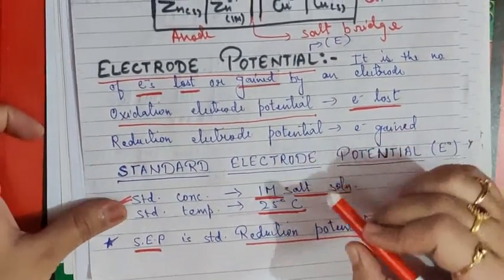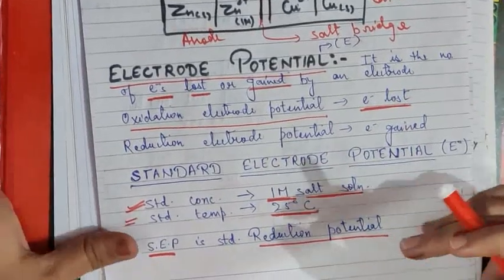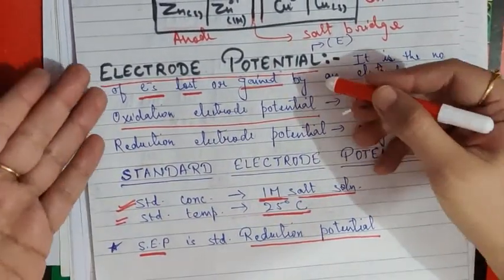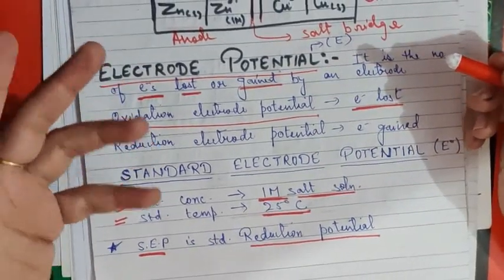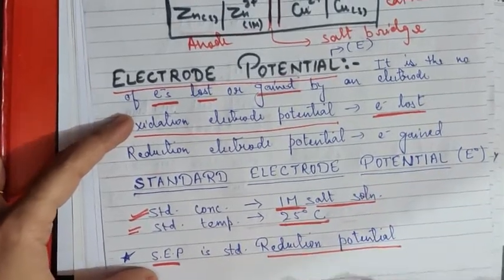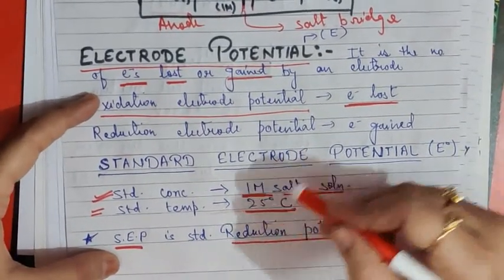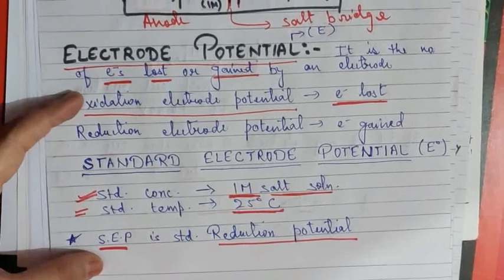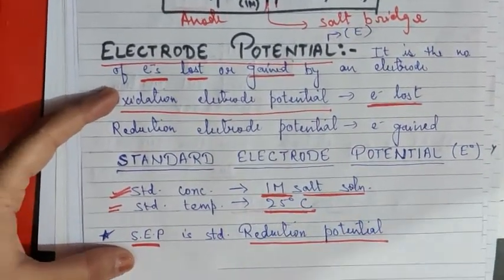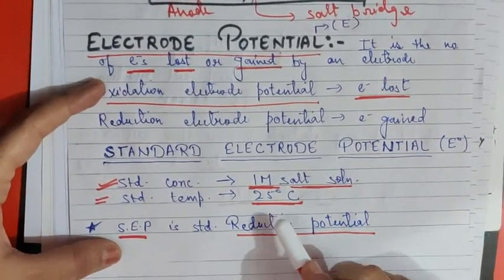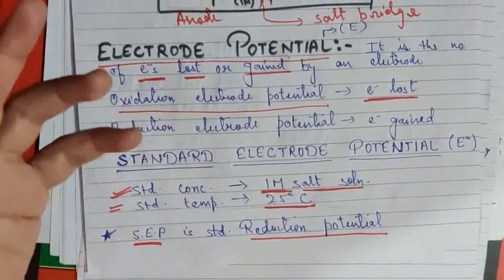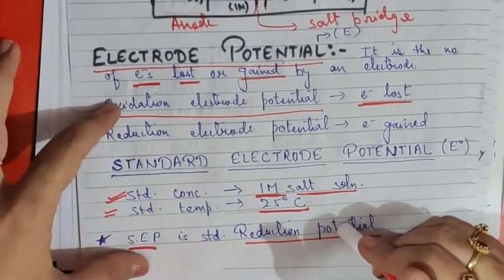Hello students, in the last class we studied about the electrode potential concept and the standard electrode potential concept. Electrode potential is the electron lost or gained by the electrode. Standard electrode potential means the conditions are standard — specifically, the concentration of the solution should be one molar and the temperature should be 25 degrees Celsius or 298 Kelvin.